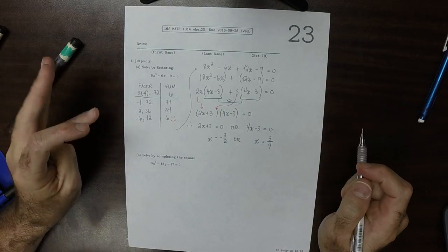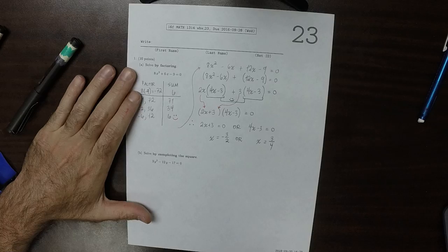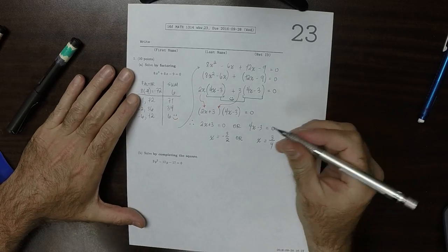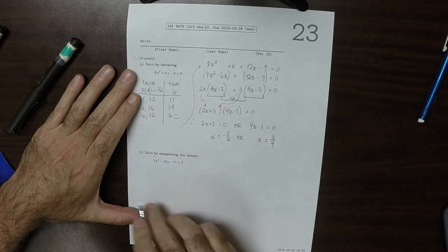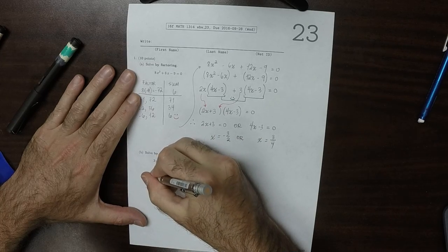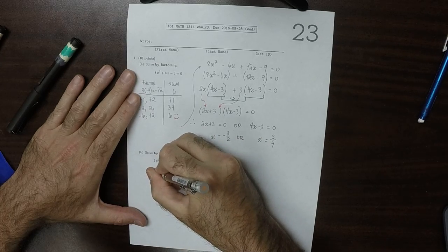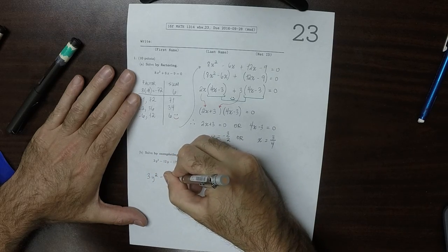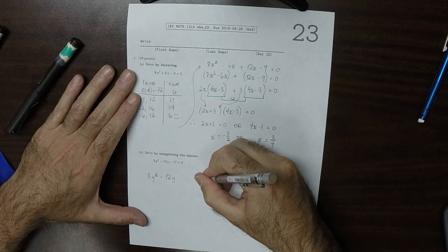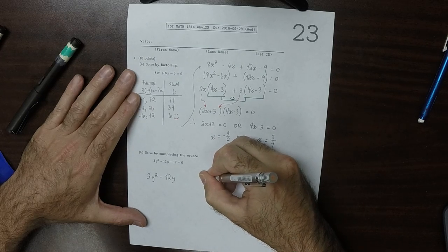Part B says solve by completing the square. So, take all the terms with y on the left-hand side, and all the terms without y, I'll move to the right-hand side.